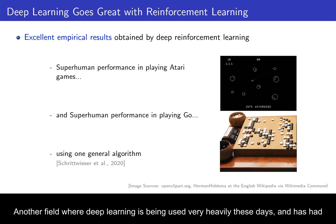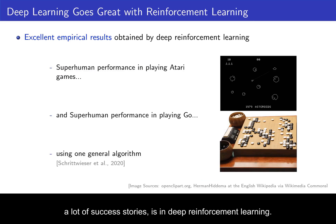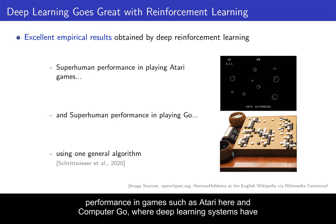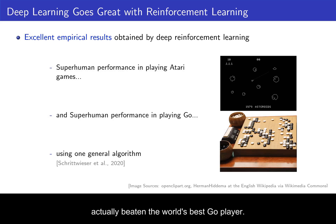Another field where deep learning is being used heavily these days is deep reinforcement learning. The combination of deep learning and reinforcement learning has achieved superhuman performance in games such as Atari and Computer Go, where deep learning systems have actually beaten the world's best Go player.